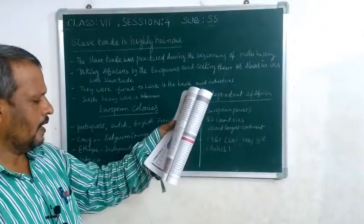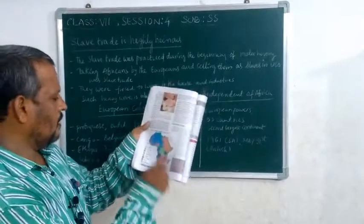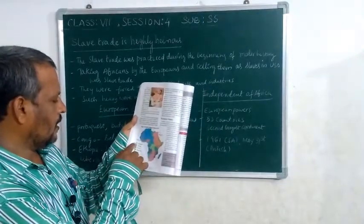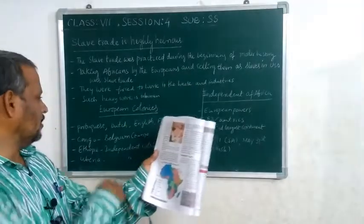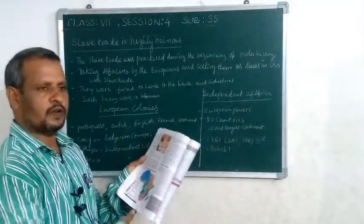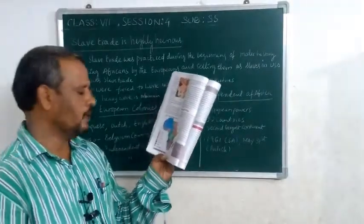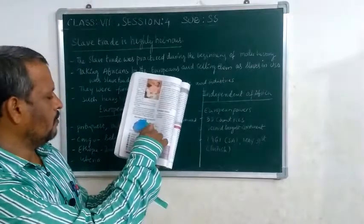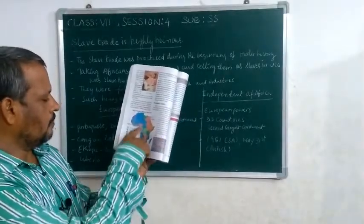Here is the African map. Green color represents Belgium — Belgium is a European country. Congo was one of the colonies of Belgium. Next is Britain. These are the Britain-occupied countries in Africa.